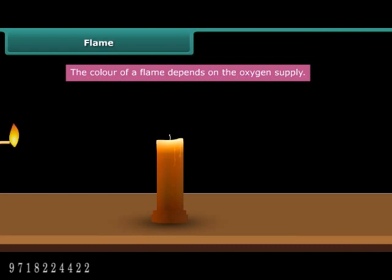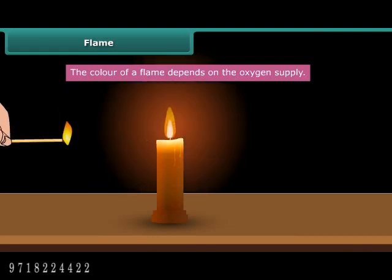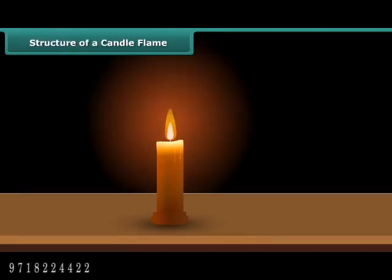Do you know how these flames are obtained? When we burn a candle with a matchstick, the heat of the matchstick melts and vaporizes wax, which rises through the wick and forms a flame. A candle flame can be divided into three regions.